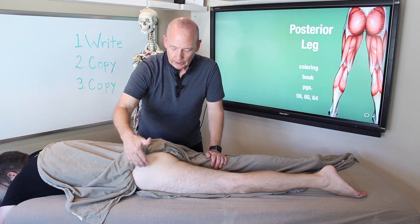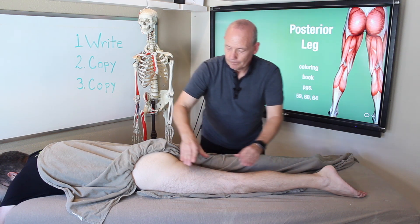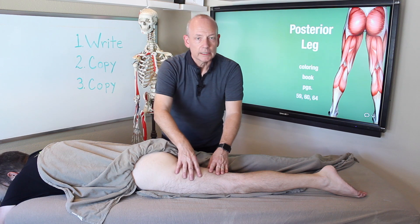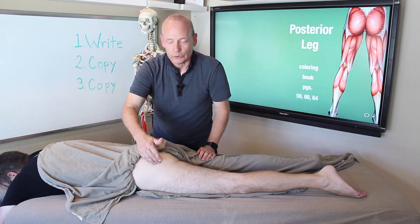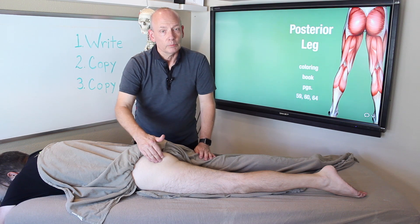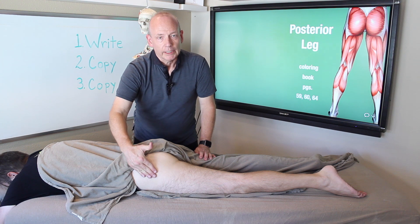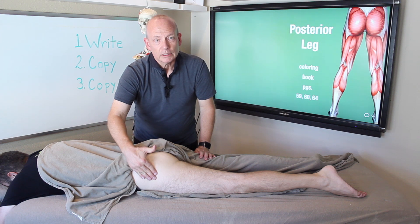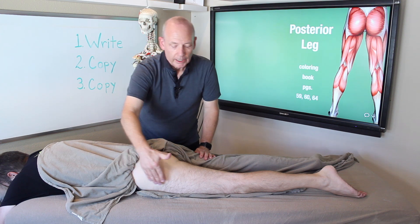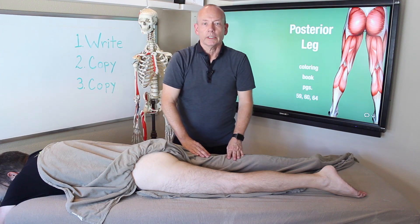In review: gastrocnemius, soleus, hamstrings — biceps femoris, semitendinosus, semimembranosus — the gluteal muscles — gluteus maximus, gluteus medius, and gluteus minimus — piriformis, the deep lateral rotator of the hip, the abductors — gluteus medius, gluteus minimus, tensor fascia latae — and the iliotibial tract. Those are the posterior leg muscles.